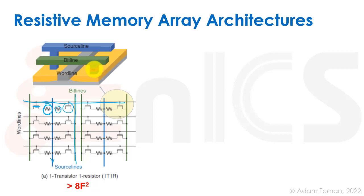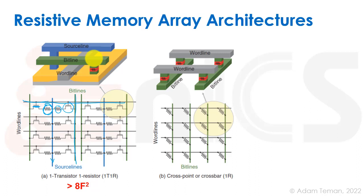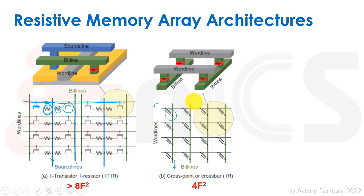The other approach providing extremely high density is a cross-point or crossbar array. If the first was called a 1T1R array — needing a transistor and a resistor — here we just place one resistor between our word line and bit line. We pulse the word line high and see if the bit line gets current, telling us if we have a high or low resistive state. This can provide 4F-squared density because we just need the cross between word line and bit line, with the resistor placed inside the vias.